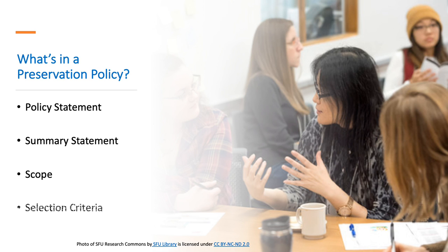Selection criteria is a section that outlines how decisions are made regarding what will be preserved. It may include factors by which selection decisions are made, such as the importance of an object or publication to user communities, quality of the object or publication, uniqueness of the object or publication, and risks to the object or publication.